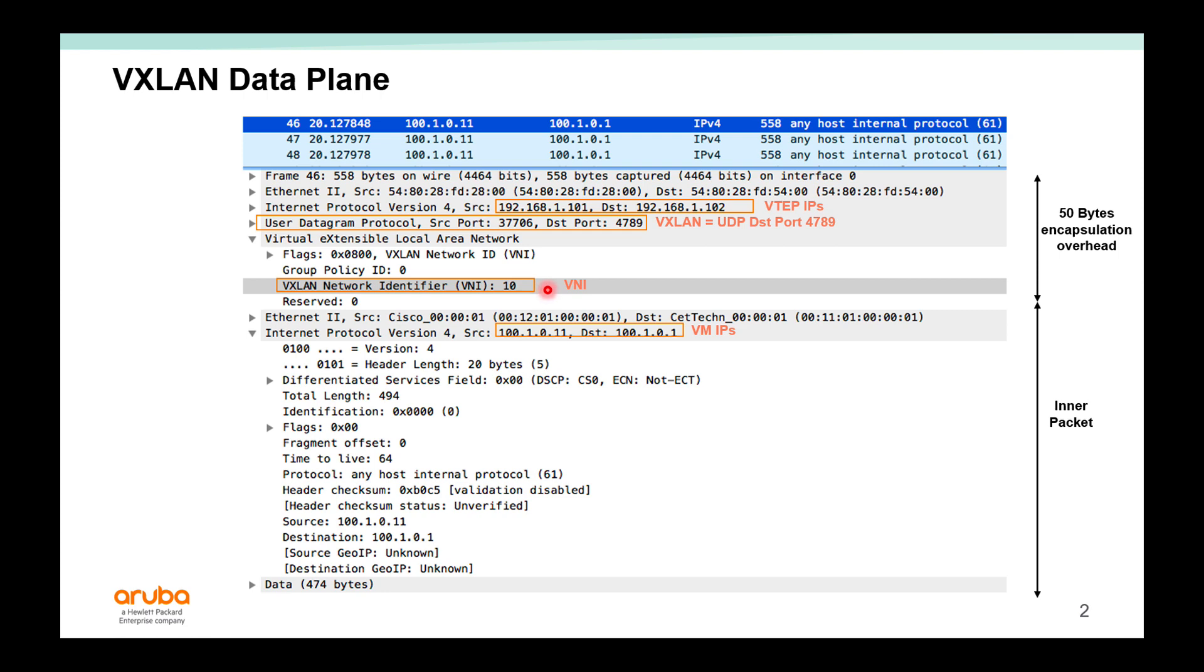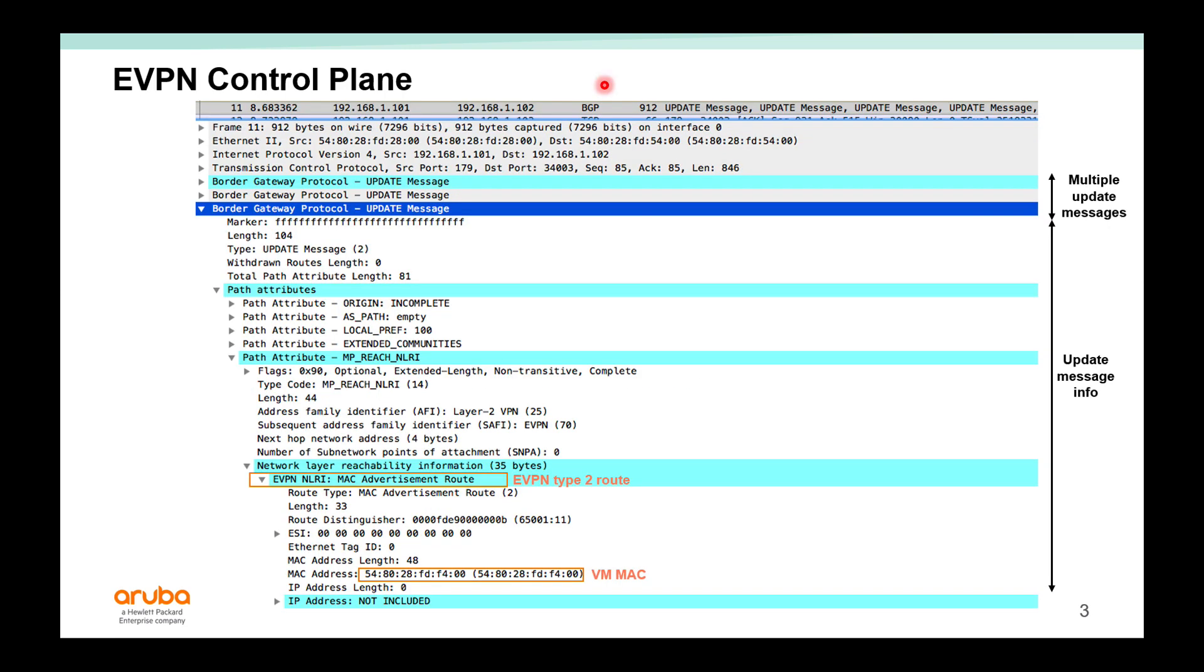EVPN control plane is MP-BGP. In this Wireshark we have VTAPs sending updates. A single update has multiple update messages. If you scroll into one of them, here's what we will see as an example. We have address family identifier AFI of 25 and the SAFI, subsequent address family identifier for EVPN, is 70.